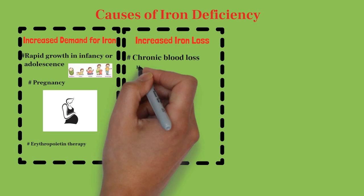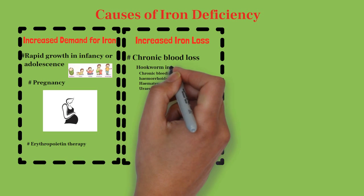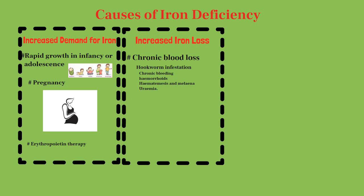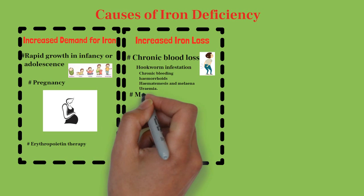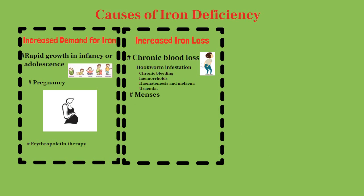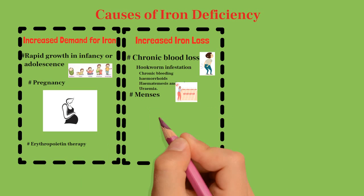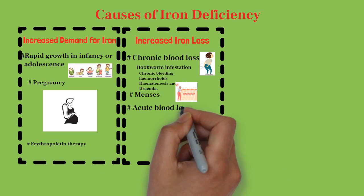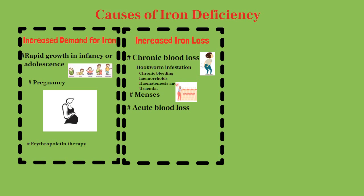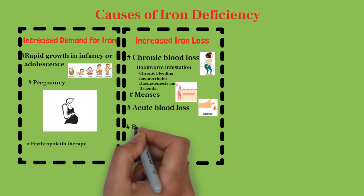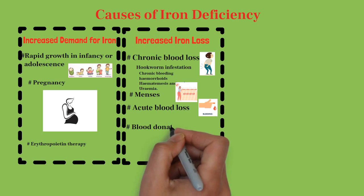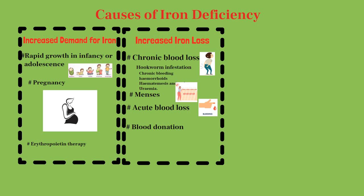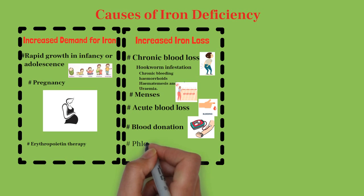Parasite infection is another important cause of iron deficiency anemia. In pediatric cases this is commonly seen, where hookworm-like parasites cause chronic loss of iron. Other obvious causes of iron deficiency anemia are the menstrual cycle, mostly in menorrhagic women. Acute blood loss like RTA injury can also cause anemia. Blood donation and phlebotomy are other rare causes.